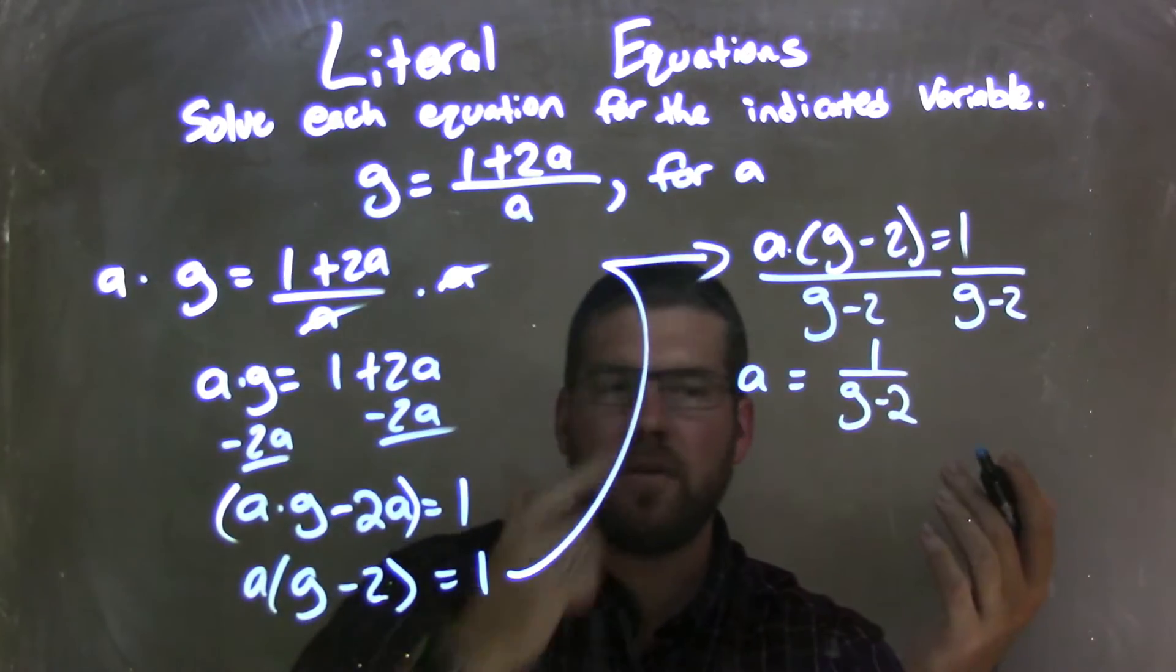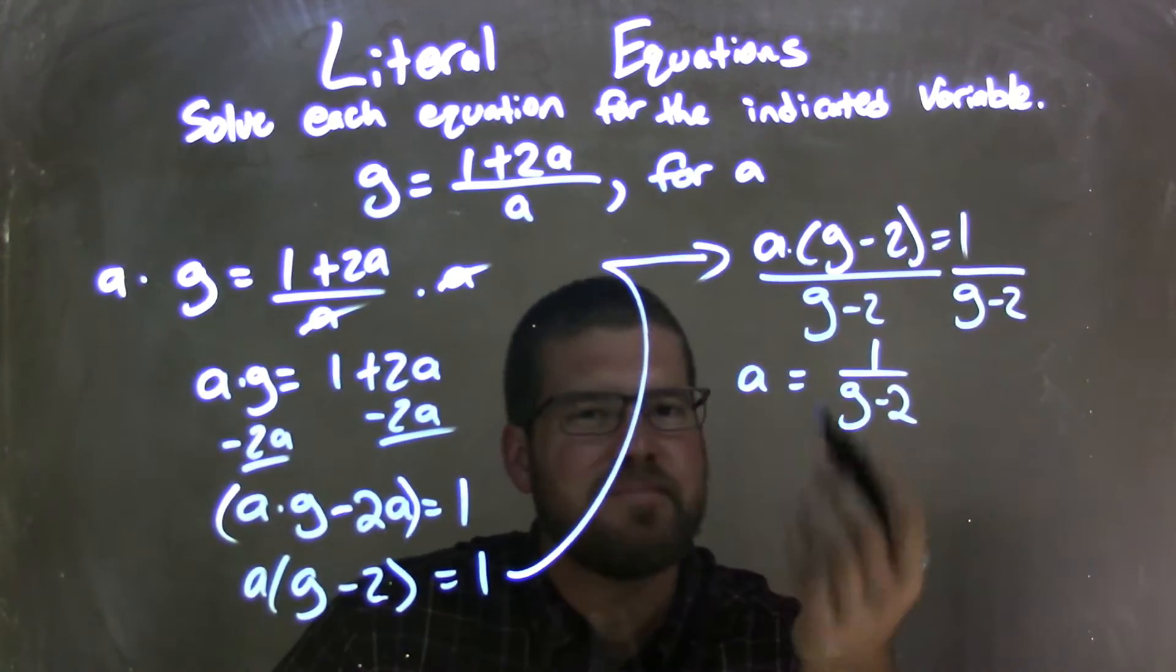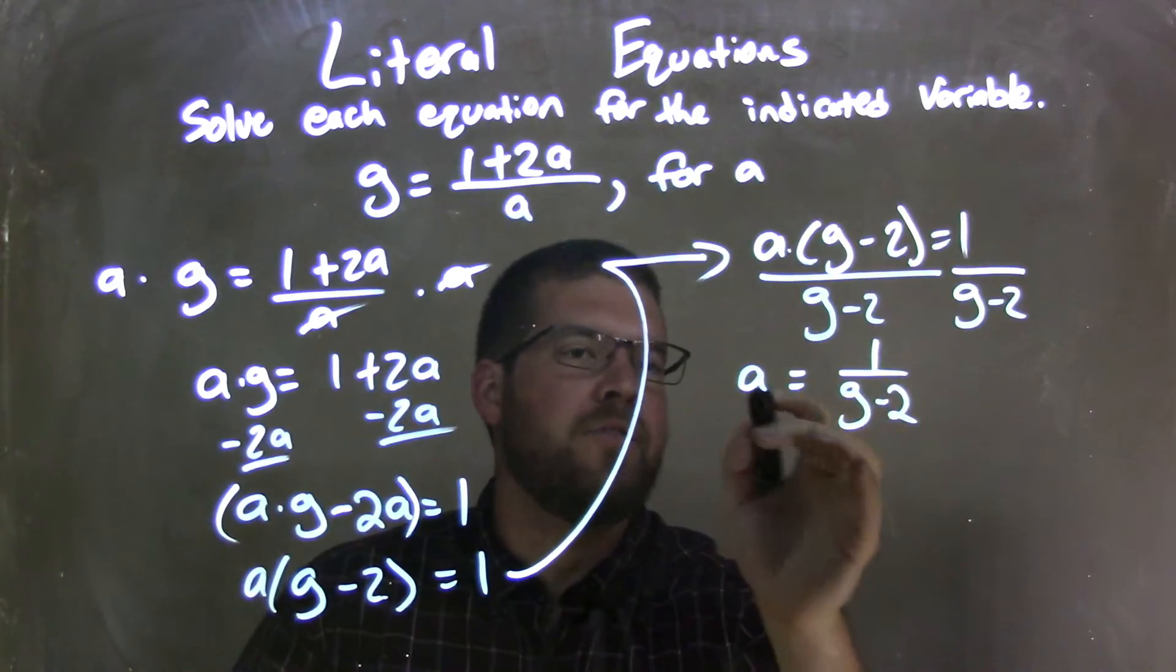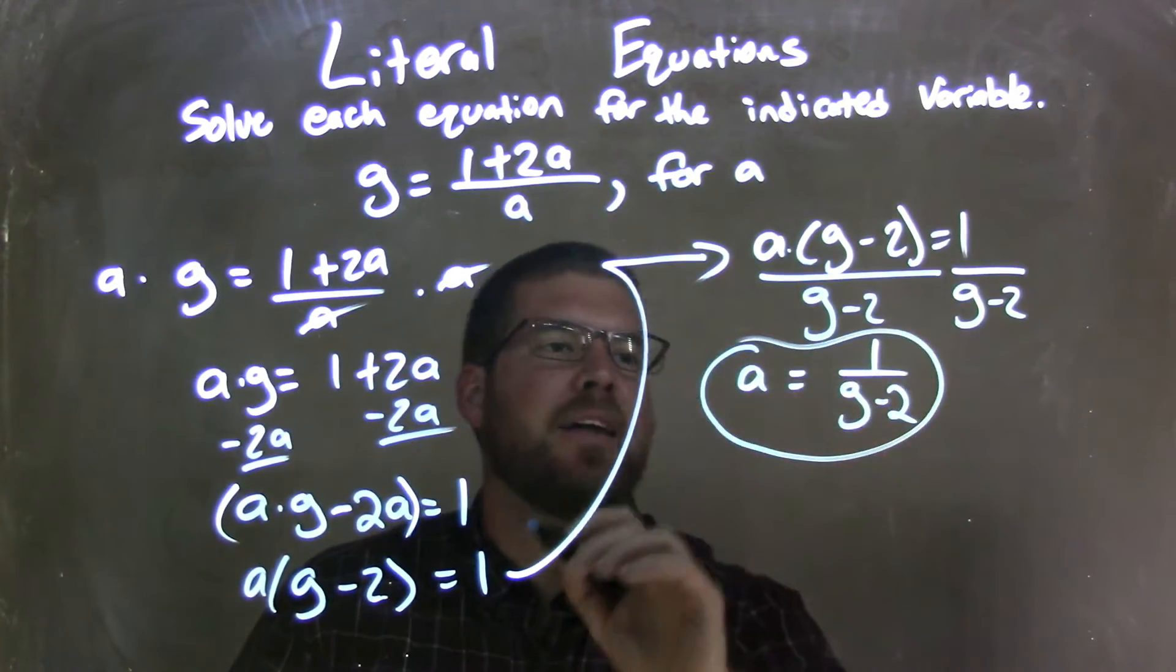Well, from there, I have nothing else to do. a is already isolated, it's by itself, and it's equal to 1 over g minus 2. And so now, I have my answer. There it is.